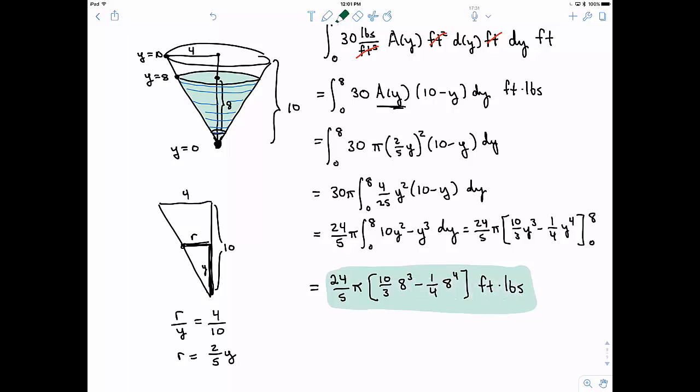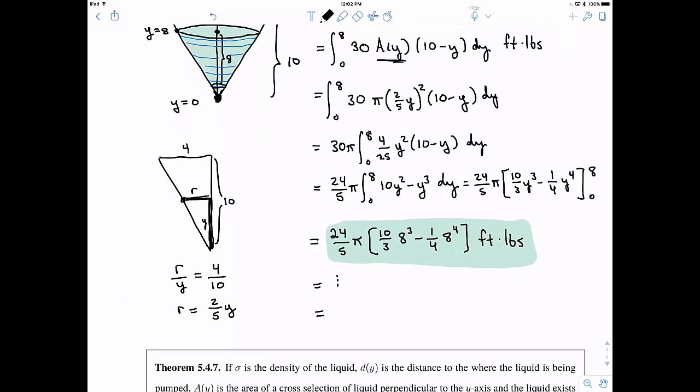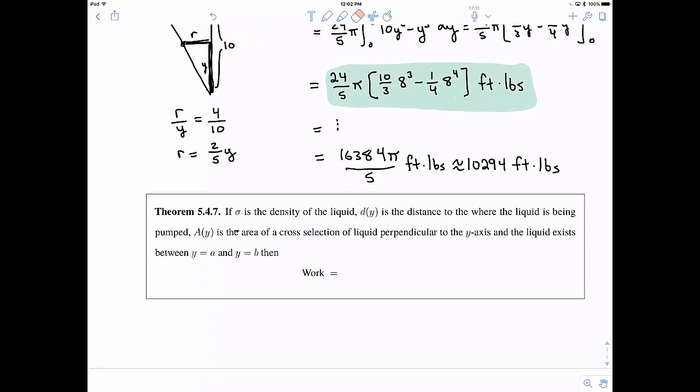Now, if you had a calculator or a lot of time on your hands, this does simplify down. You can check. And this becomes 16,384 pi over 5. And that's again, units of foot pounds. And if you had a calculator, you could put this in there. And you can see that this will simplify and give you the approximation of 10,294 foot pounds. But again, really that first highlighted answer there is what I would expect you to show on quizzes, exams, things like this.